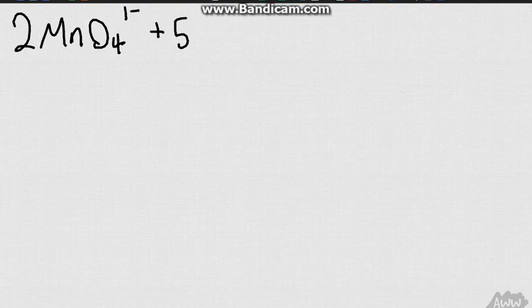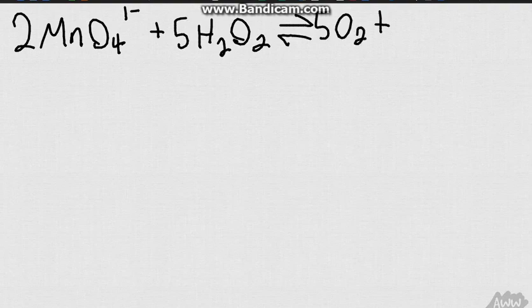So first of all we're going to be given this reaction. Okay so we've got 2MnO4 minus, or 1 minus, and this equation will be given, you won't be expected to know what this equation is, plus 5H2O2, though you might have to balance the equation, gives us oxygen gas and 2Mn2+.